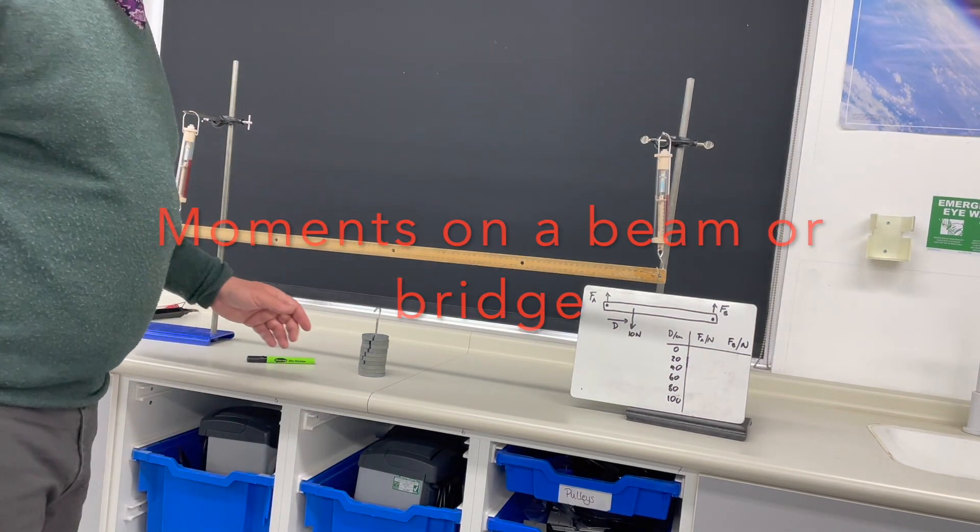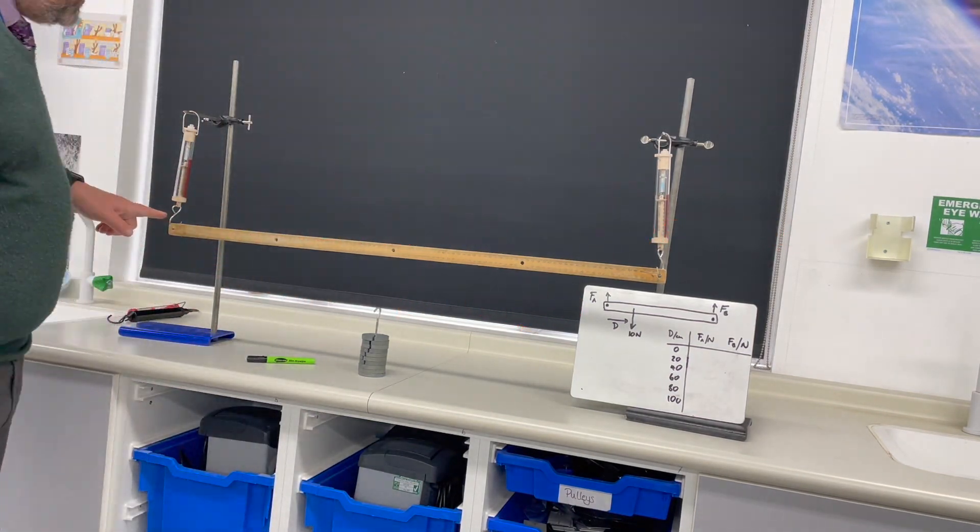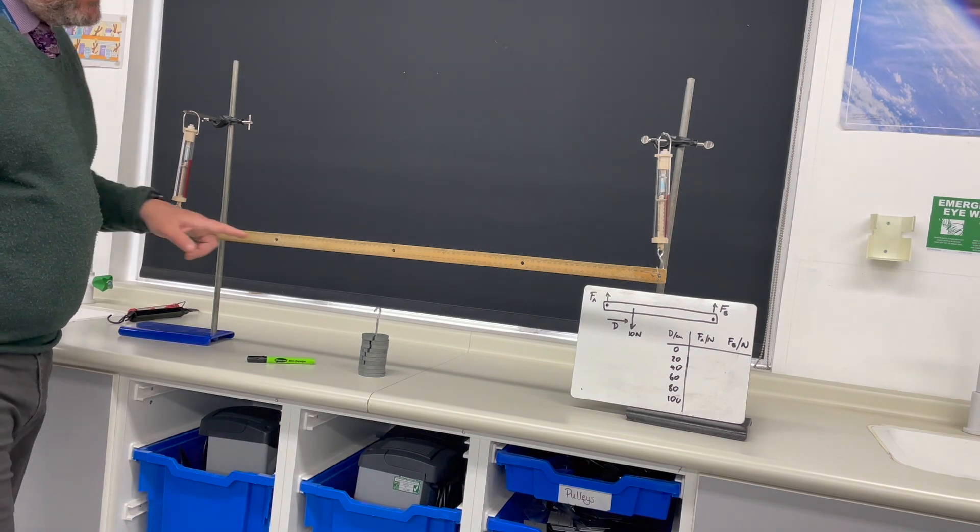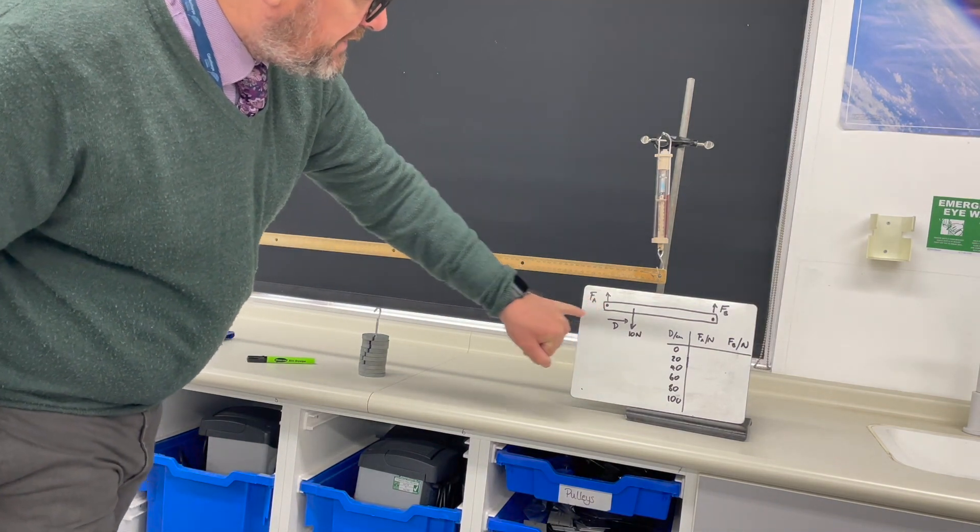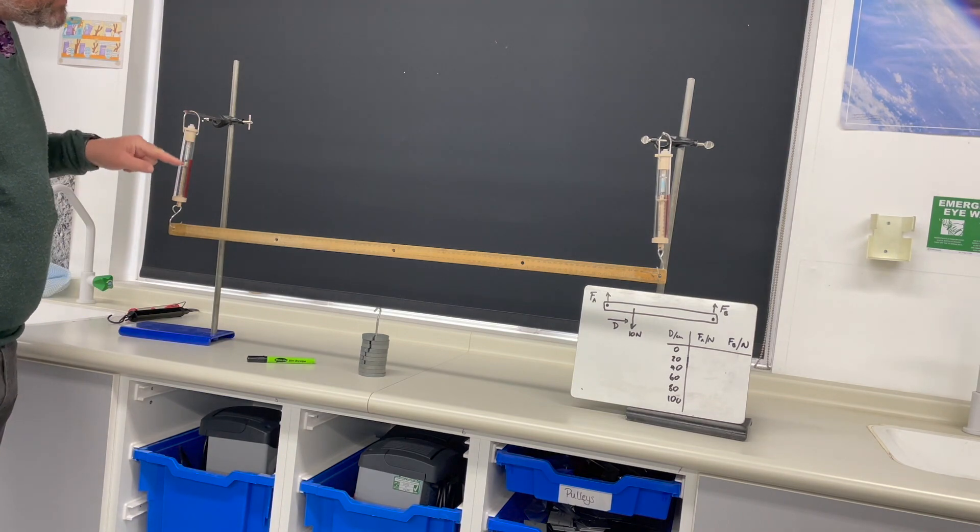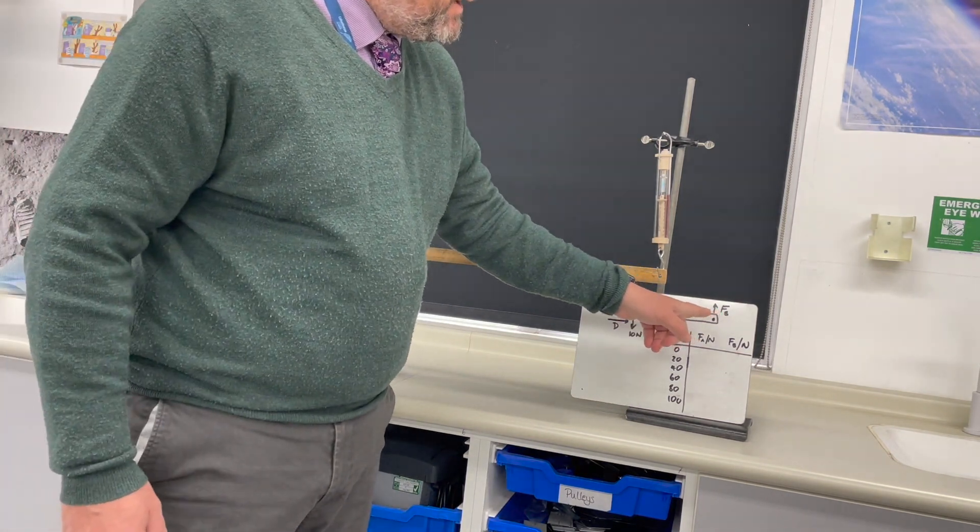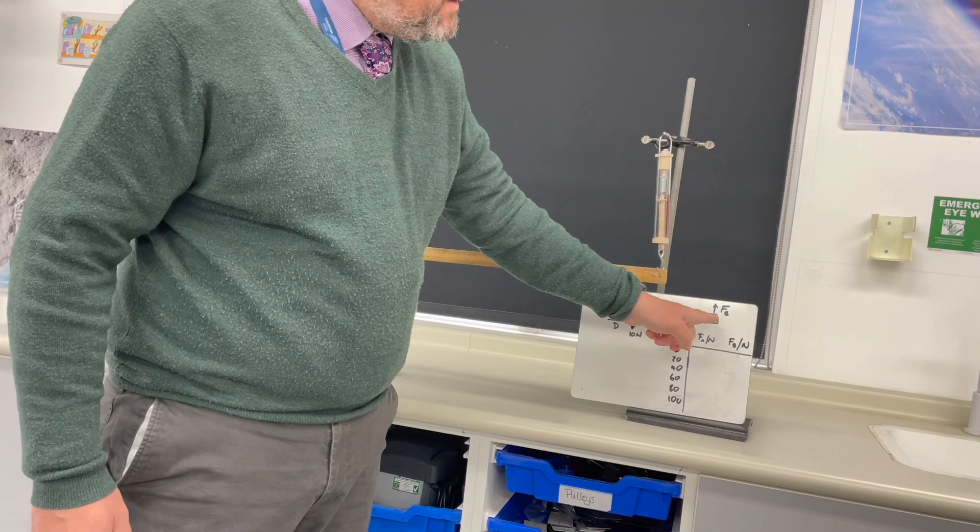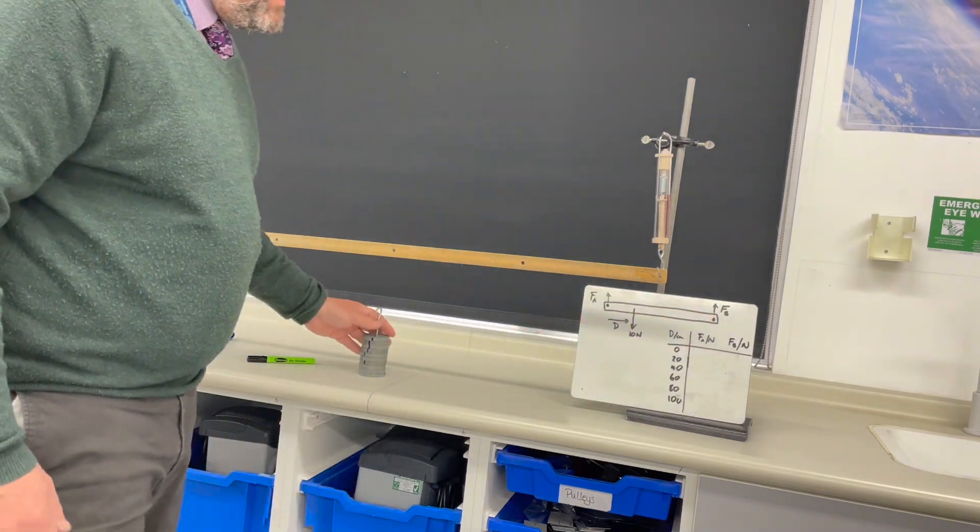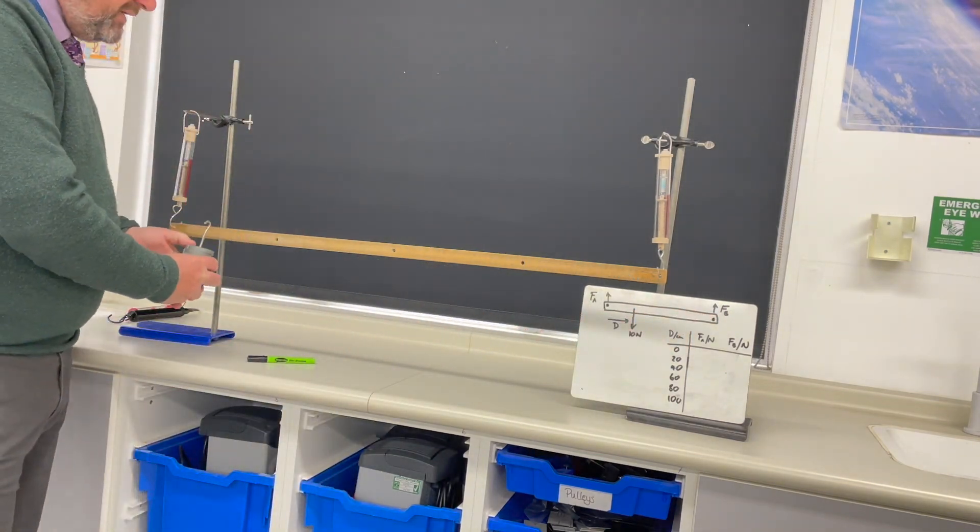In this experiment we're going to simulate a bridge. This is one bridge support and we're going to measure the force on that, FA, using this Newton meter. This is the other bridge support and we're going to measure that using this Newton meter, and that's FB. I'm going to hang a weight on the ruler.